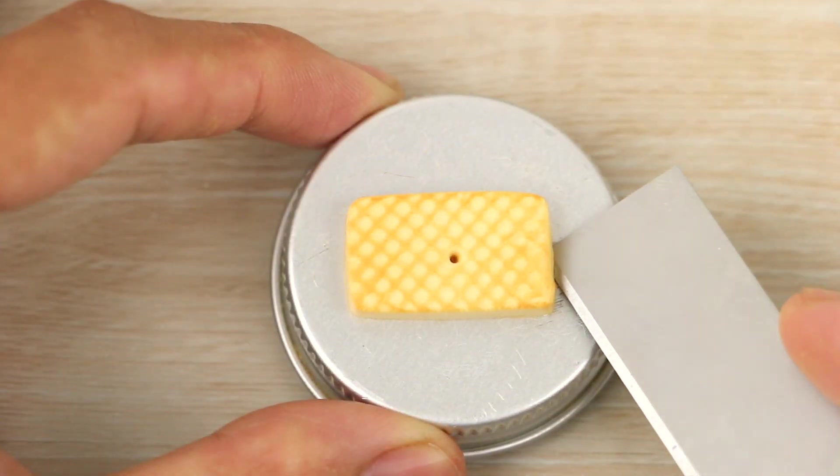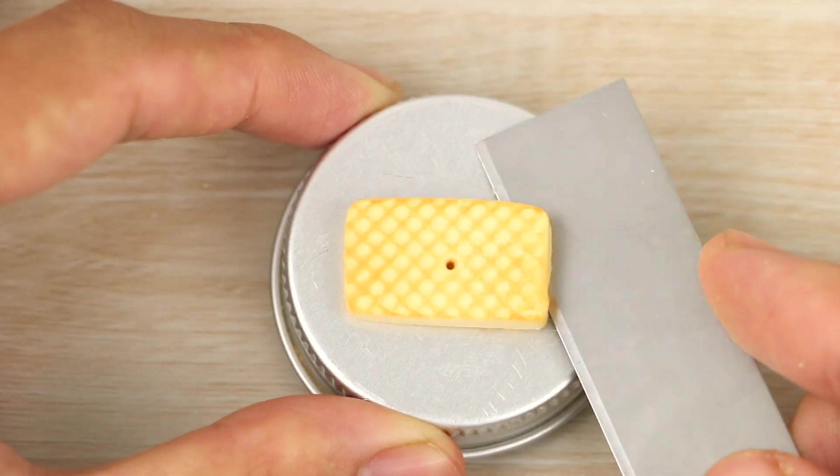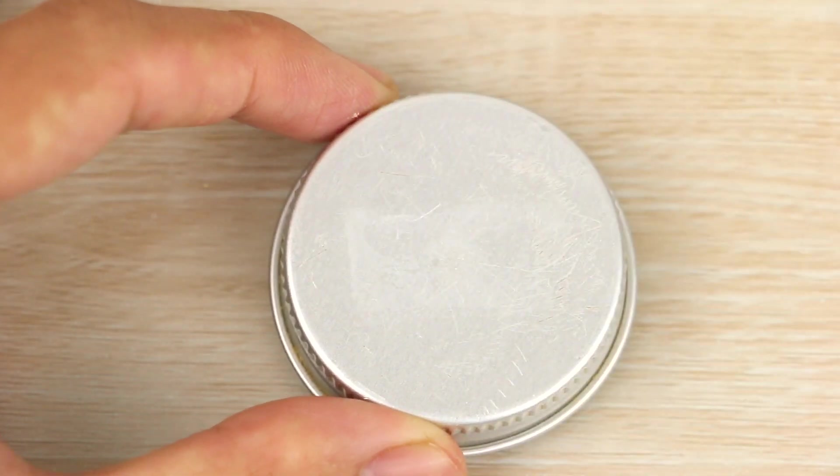Then I'm just going to repeat the steps with the second wafer and bake them in the oven using my package's instructions.